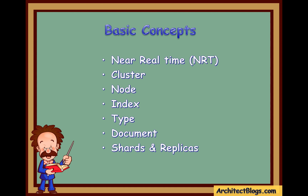The number of shards can be defined at the time of creating an index. Sharding is important because it enables two key features: first, it allows horizontal scalability, and second, it allows us to distribute and parallelize operations across shards.